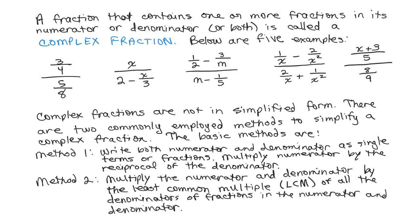Complex fractions are not in simplified form, and there are two common methods for simplifying a complex fraction. In the first method, both the numerator and denominator need to be written as single fractions, and then you multiply the numerator by the reciprocal of the denominator. The very first example is in that form, so method one works very well for that. For the rest of them, method two is actually easier for most people. You multiply the numerator and denominator of the complex fraction by the least common multiple of all the denominators of fractions in the numerator and denominator, and this eliminates the complex fraction in the first step.